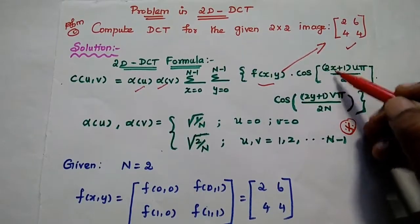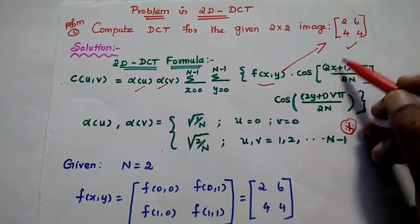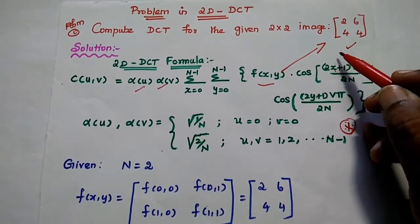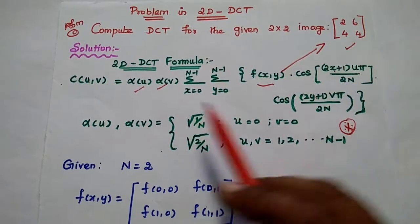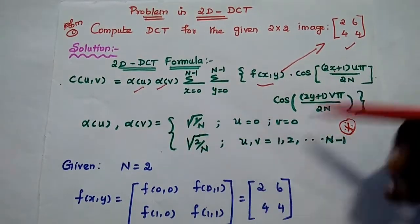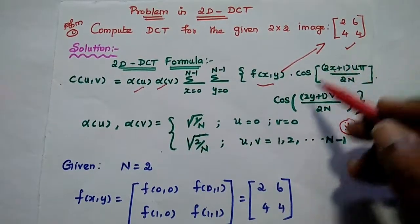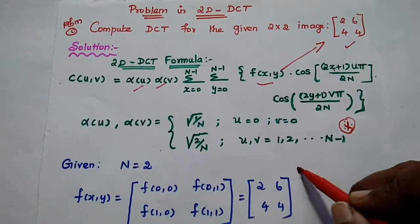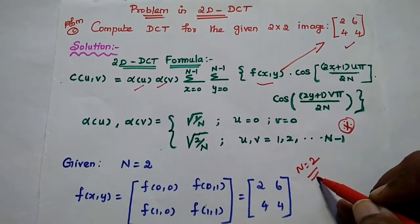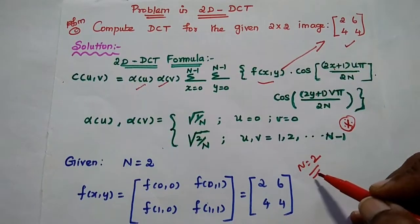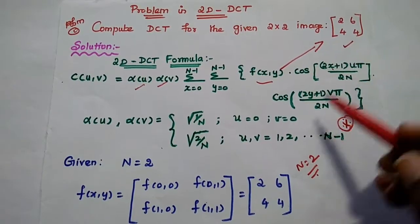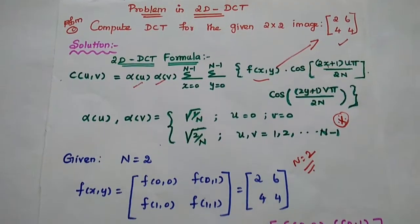Here x and y represent the number of rows and columns, and capital N represents the image size. For a 2x2 image, N equals 2. We are going to find the DCT coefficients for this image data using this formula.